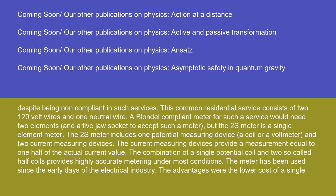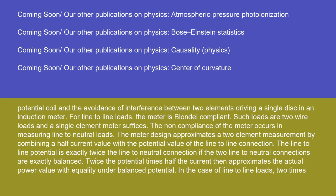This common residential service consists of two 120-volt wires and one neutral wire. A Blondel compliant meter for such a service would need two elements and a five-jaw socket. But the 2S meter is a single-element meter. It includes one potential measuring device — a coil or a voltmeter — and two current measuring devices. The current measuring devices provide a measurement equal to one-half of the actual current value. The combination of a single potential coil and two so-called half coils provides highly accurate metering under most conditions. The meter has been used since the early days of the electrical industry, with advantages including the lower cost of a single potential coil and the avoidance of interference between two elements driving a single disc in an induction meter.